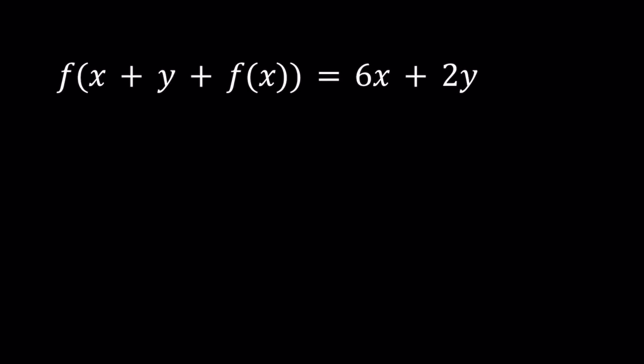So we have f(x + y + f(x)) = 6x + 2y. This is from real numbers to real numbers. It's a continuous function. Any of the good properties that you want you can add them. I'll be presenting two methods and let's start with the first one.